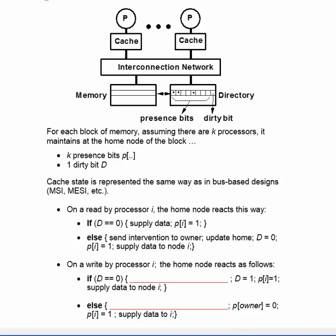On the other hand, if the dirty bit was one, something needs to happen. The presence bit of the owner is set to zero, that's the former owner actually. The presence bit of I, the requesting cache, is set to one, and data is supplied to the requesting cache I. Now, see if you can fill in the blanks in the write transaction.